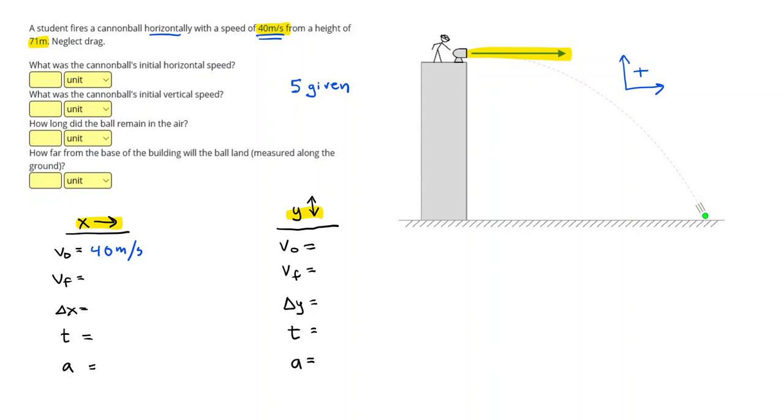Then our height of 71 meters. Height is measured up and down this building. So that is going to be our vertical displacement. But be careful, make sure we put a negative on that, negative 71 meters.